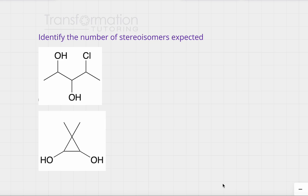To identify the number of stereoisomers expected, the formula is 2^n, where n is the number of chiral carbons — also called stereocenters or stereogenic carbons. A chiral carbon is a carbon attached to four different groups. Let's see how many chiral carbons each molecule has and how many stereoisomers we would expect.